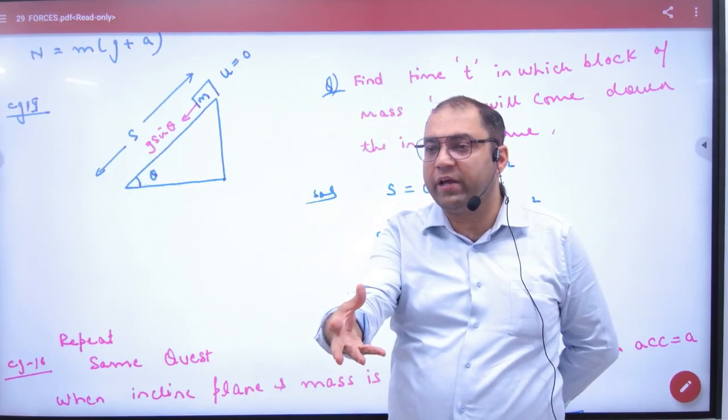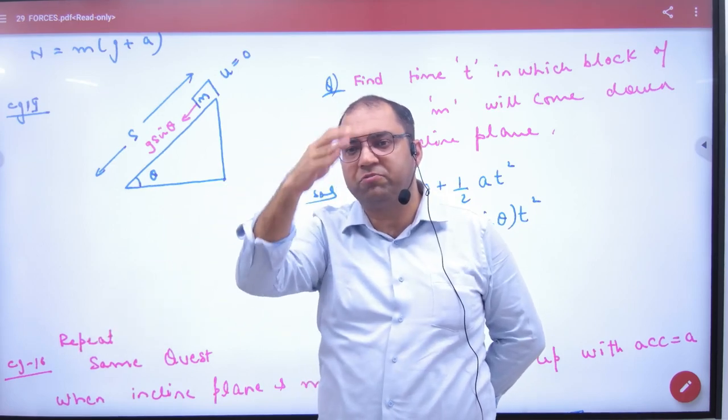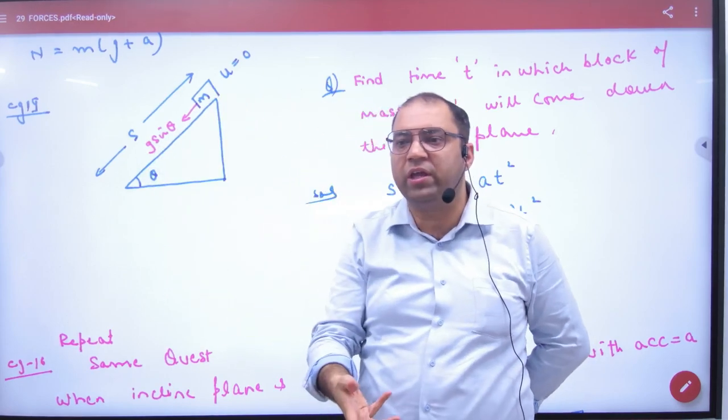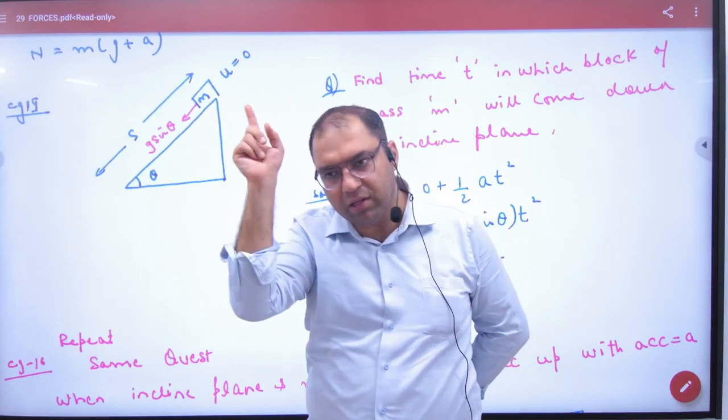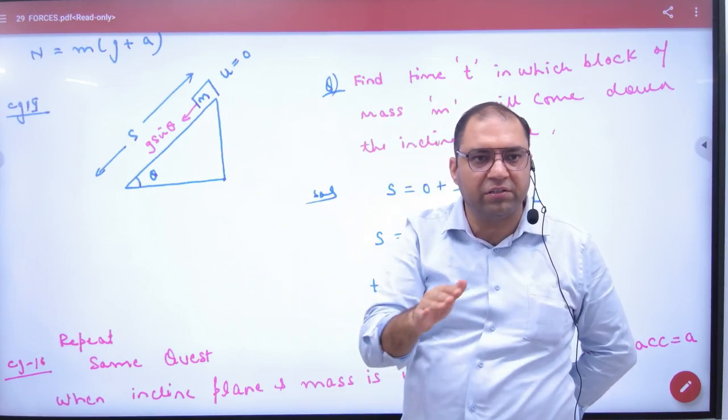We have done Mg, Mg cos theta, Mg sin theta. So Mg sin theta force brings this object down. What is the acceleration in the body? g sin theta. We have discussed this. So the object will slide down with acceleration g sin theta.